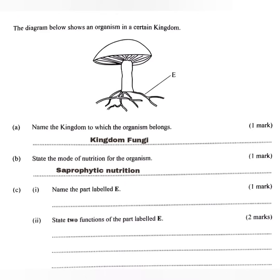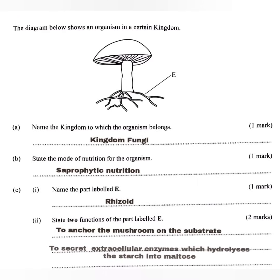As for C, Roman numeral number one is saying: name the part labeled E. Part labeled E is called the rhizoid. Roman numeral number two says: state two functions of the part labeled E. The first function is to anchor the mushroom on the substrate. The second function is to secrete extracellular enzymes which digest starch into maltose.